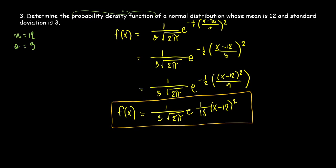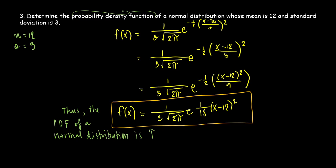For writing your conclusion, you can write: Thus, the probability density function of a normal distribution is f(x) equals 1 over 3 square root of 2π times e to the power of negative (x minus 12) squared over 18. That's how you find the probability density function.